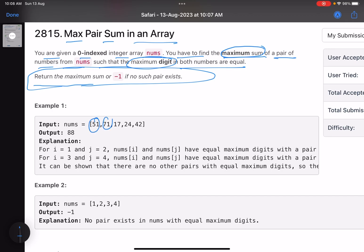Can you choose 51 and 71? No, because the maximum digit here is five, the maximum digit here is seven. The maximum digit here is seven, maximum digit here is four. The maximum digit here is four.